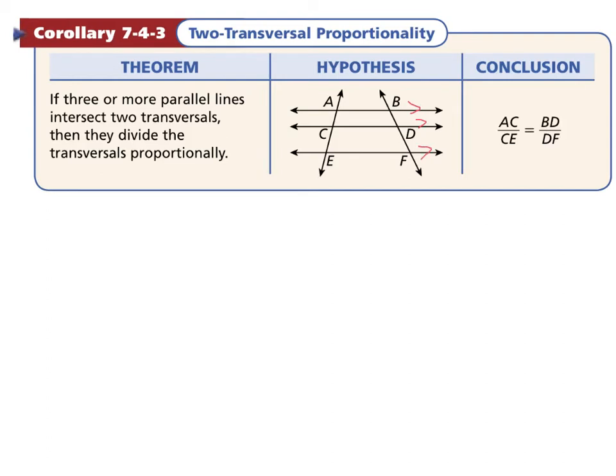If we know that, then we could say that AC, the length of AC divided by the length of CE, equals the ratio of the lengths of BD and DF.